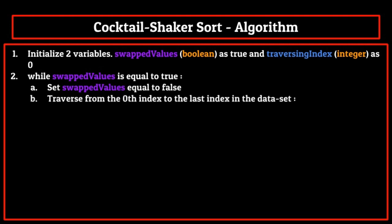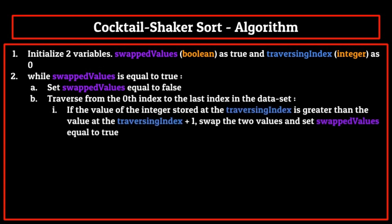Then step b entails traversing from the zeroth index to the last index in the dataset. This is a loop, so we enter it and run step i. Step i asks us if the value at the traversing index is greater than the value at the traversing index plus 1. If so, we know the two elements need to be swapped, since we're working towards a list sorted in ascending order. So we swap the two and set swapped values equal to true. Step ii simply tells us to increase the traversing index, and that's all that's needed for the first traversing loop.